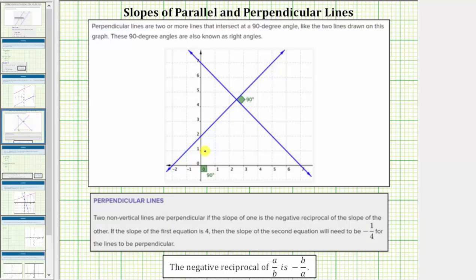Remember, perpendicular lines are two lines that intersect at a ninety-degree angle or a right angle, as shown here.